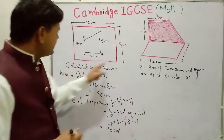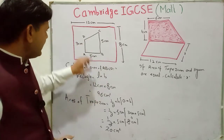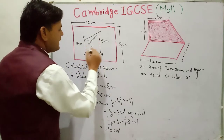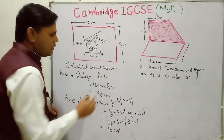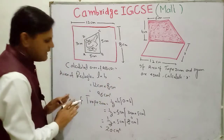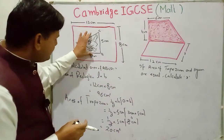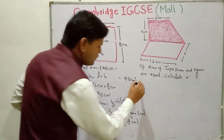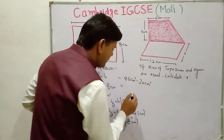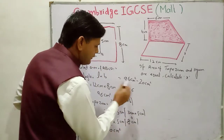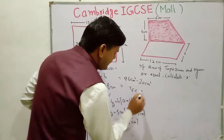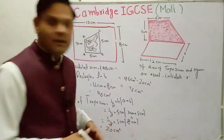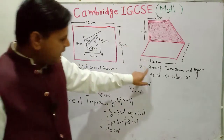First I found the area of the rectangle, then the area of the trapezium. Now to find the area of the shaded region, you subtract the value of the trapezium from the whole rectangle. So: 96 centimeters squared minus 20 centimeters squared gives 76 centimeters squared. The area of this shaded region is 76 centimeters squared.